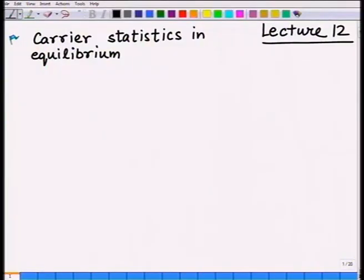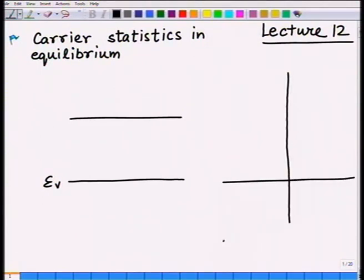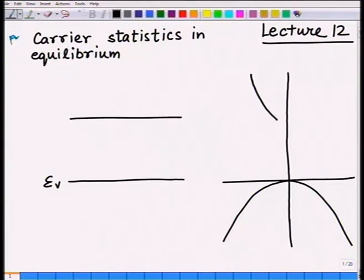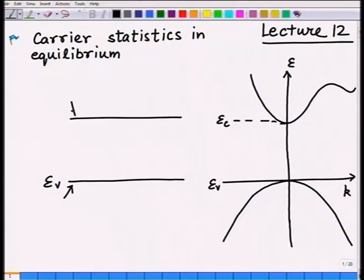Let us reduce this problem. If I think of my semiconductor and plot E versus k — here is the valence band energy Ev and here is the conduction band minimum Ec — this is a direct band gap semiconductor. Here is the bottom of the conduction band and here is the top of the valence band. If I plot these energies on the electron energy scale, these are all the allowed energies.